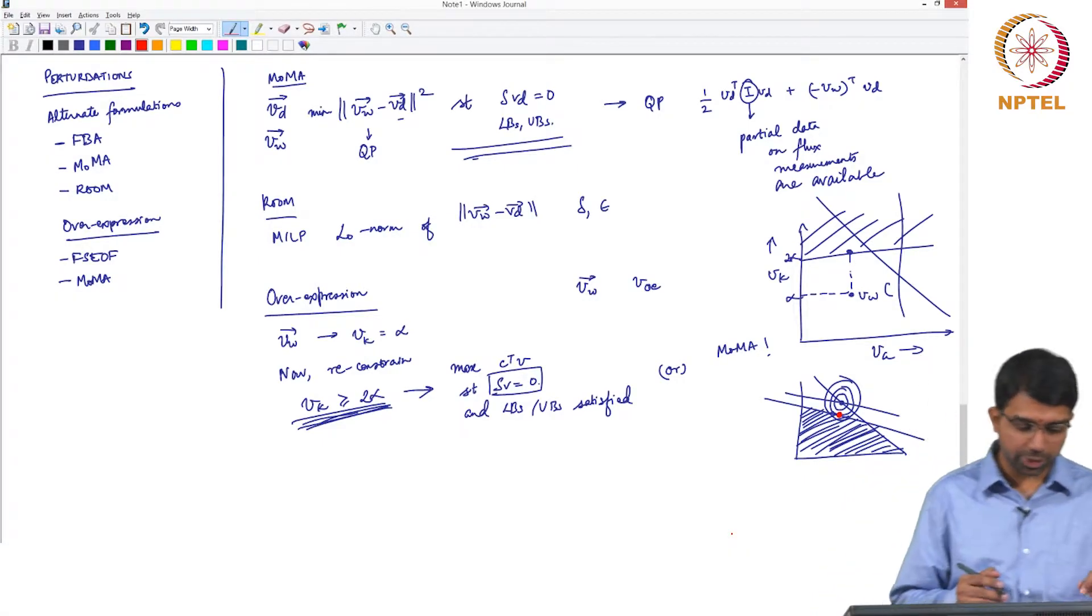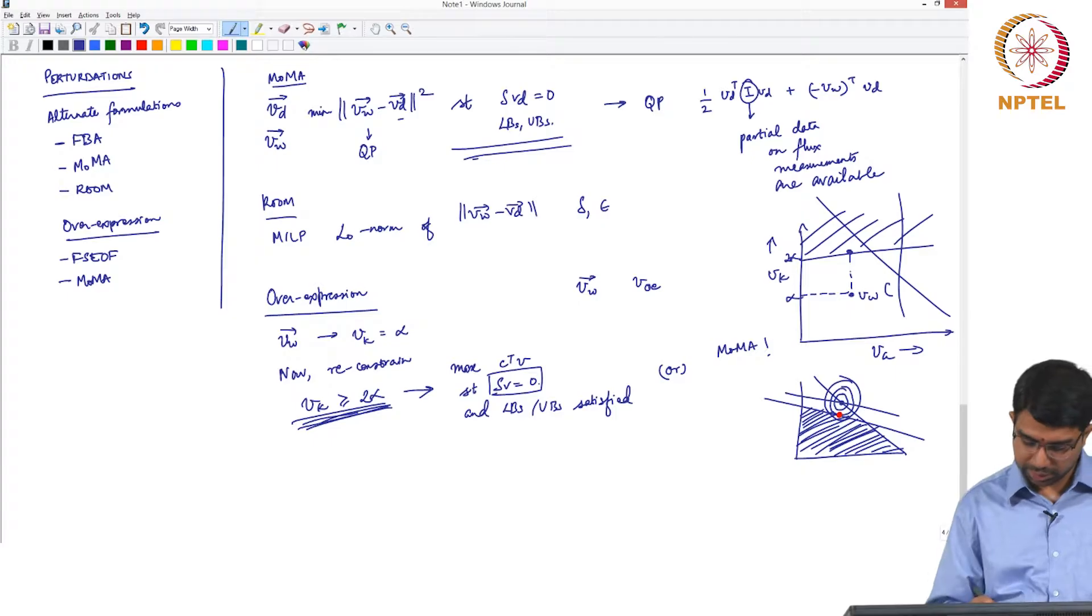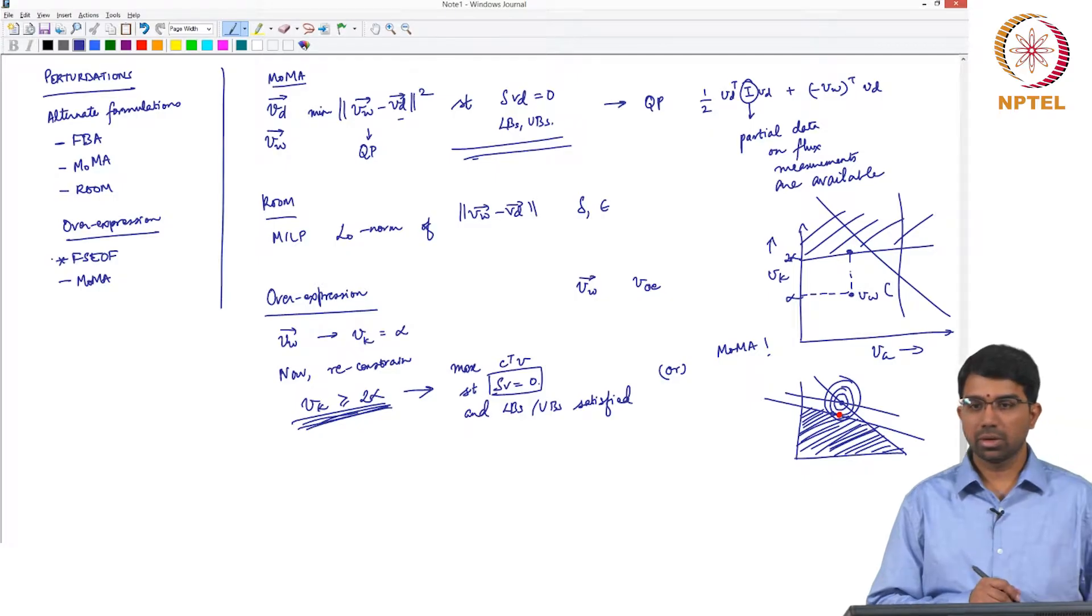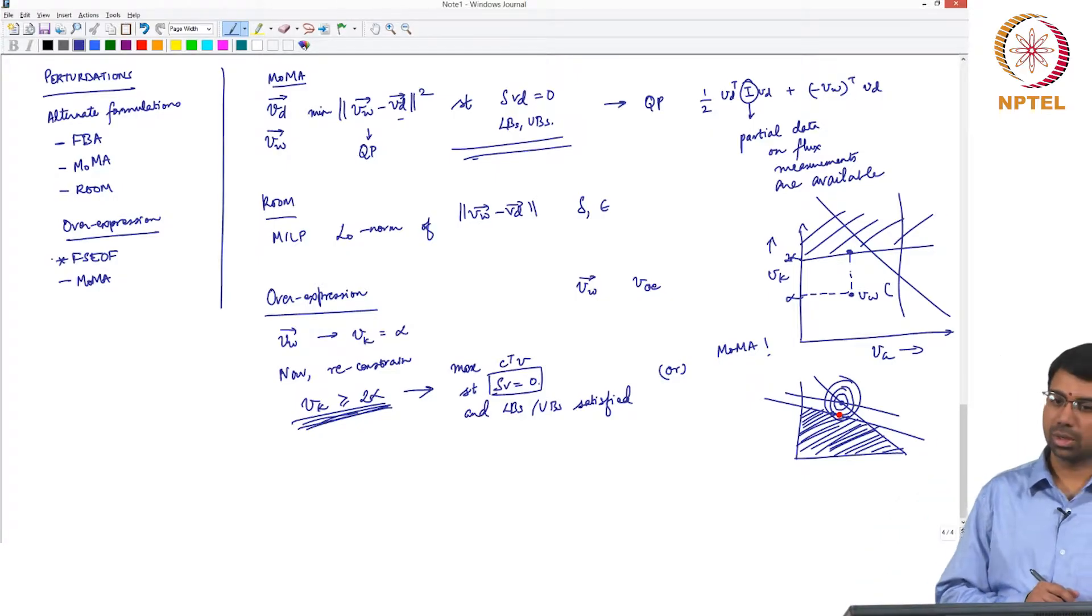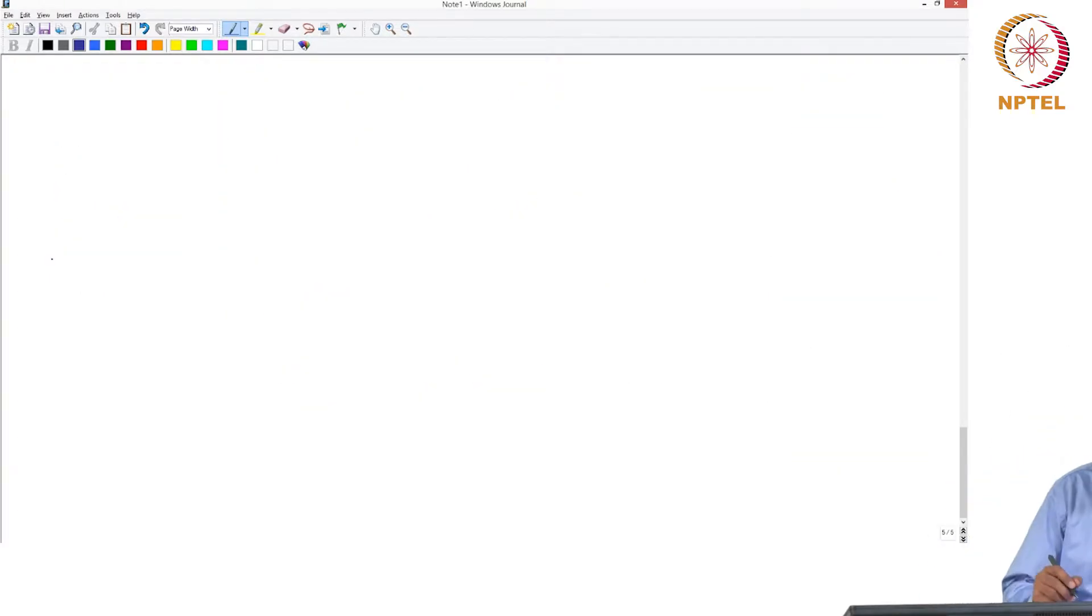What is the other important concept in overexpression? We studied FSCOF, flux scanning using enforced objective flux function. I have not shown you the recent work from our lab where we have used FSCOF twice with great success in two different systems, Lactus and Sunflower. How does FSCOF work? Let us say you first maximize Vprod and you get some Vprod star which I say is same as alpha here for the moment.